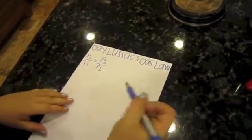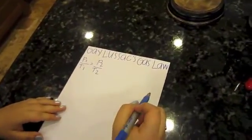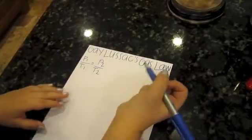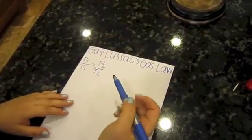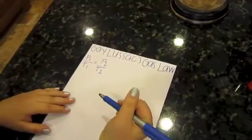Gay-Lussac's gas law has a direct change. When pressure decreases, so does temperature. The formula for this law is P1 over T1 equals P2 over T2.